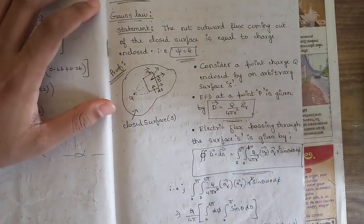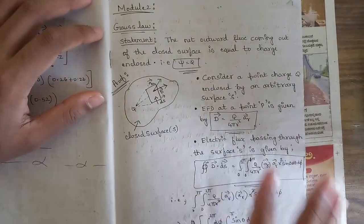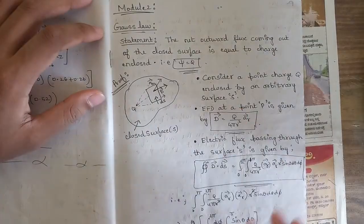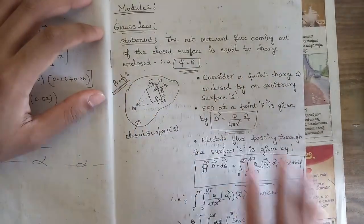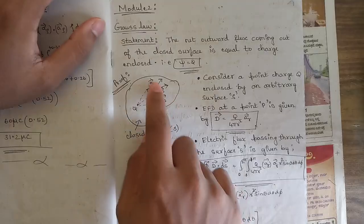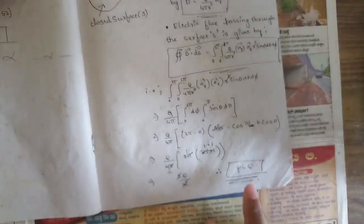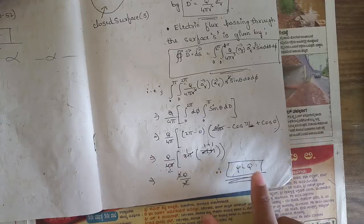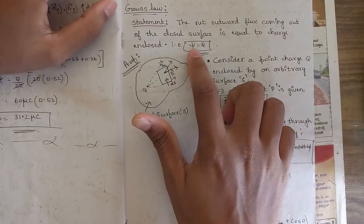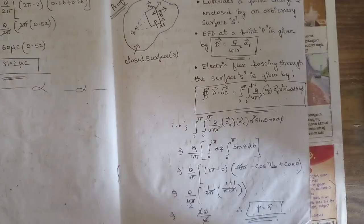Now for Module 2 — the first important concept is Gauss's Law, a must question repeated many times in question papers, possibly worth six to seven marks. Don't skip this. You need the statement, mathematical representation, pictorial representation, all necessary terms, the derivation steps, and the final expression ψ = Q — proving that the net outward flux from a closed surface equals the enclosed charge.